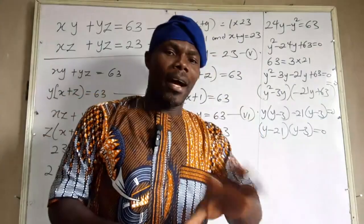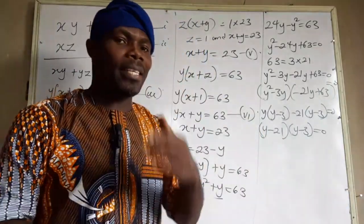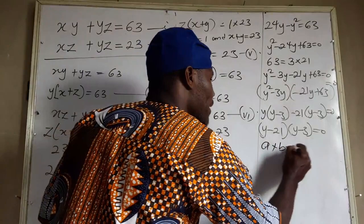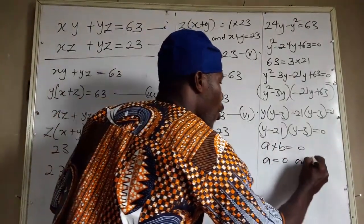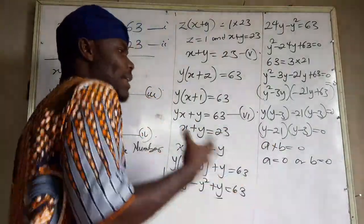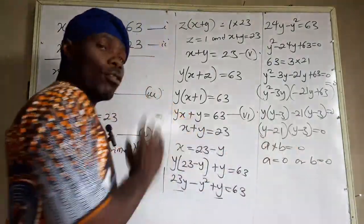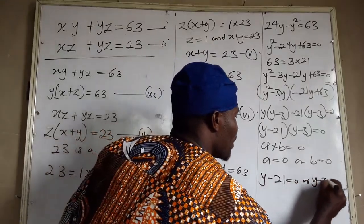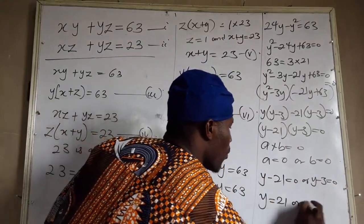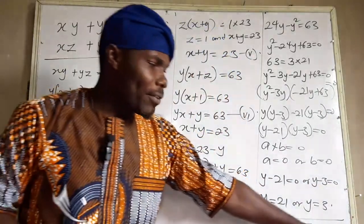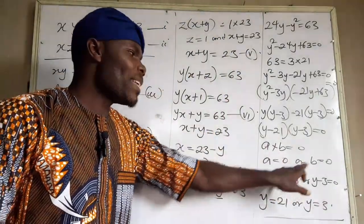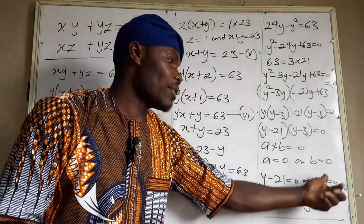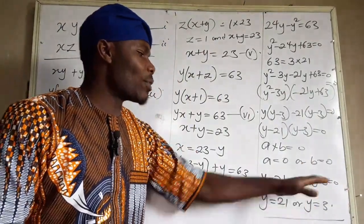Since you may have seen this kind of quadratic equation before, if a times b equals zero, then either a equals zero or b equals zero. So either y minus 21 equals zero or y minus 3 equals zero. Therefore y equals 21 or y equals 3.